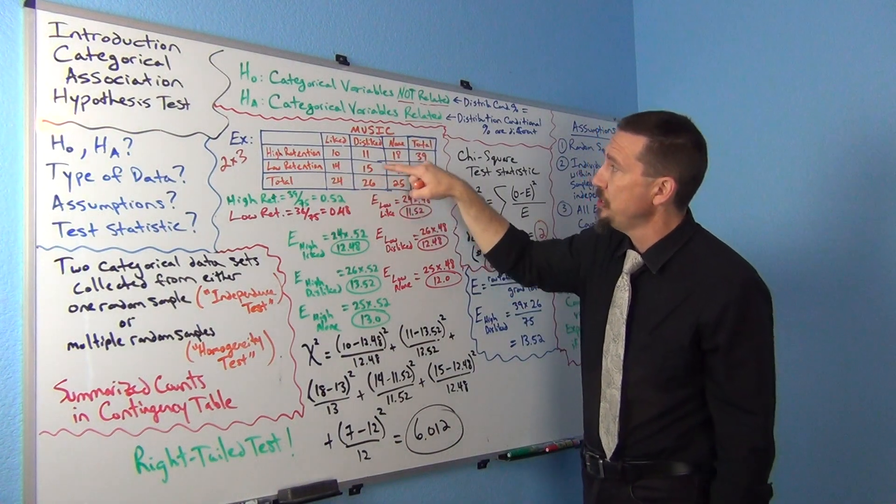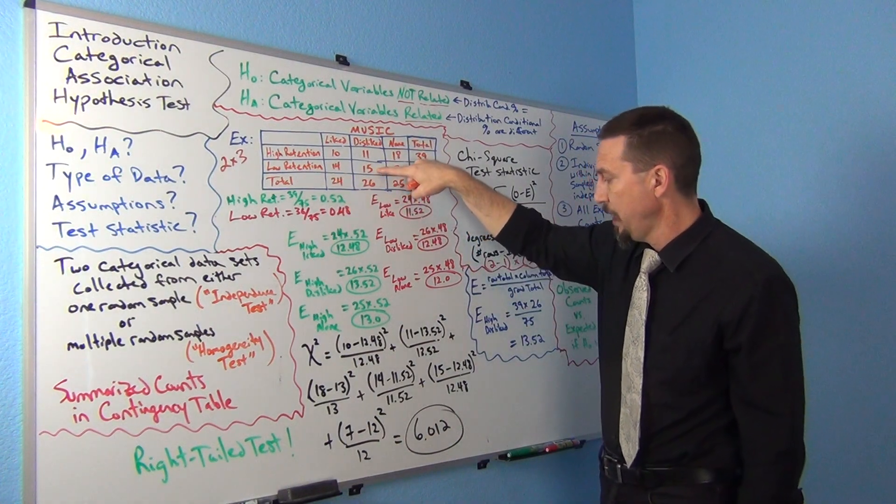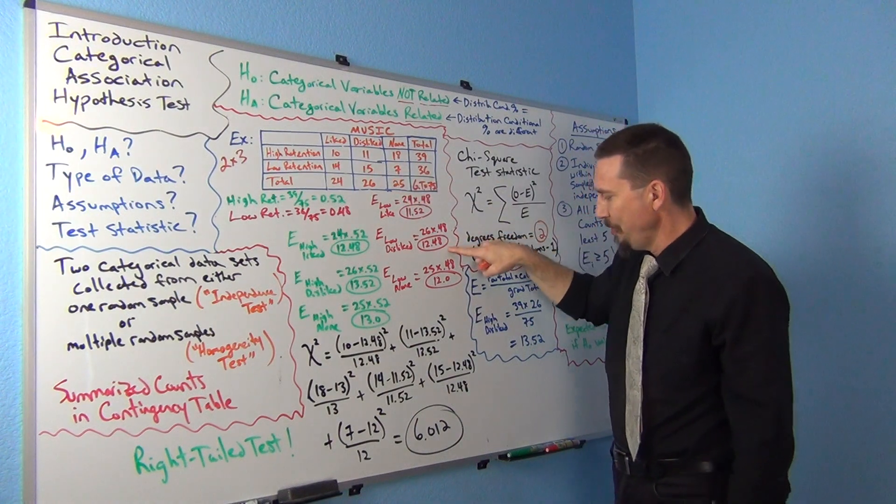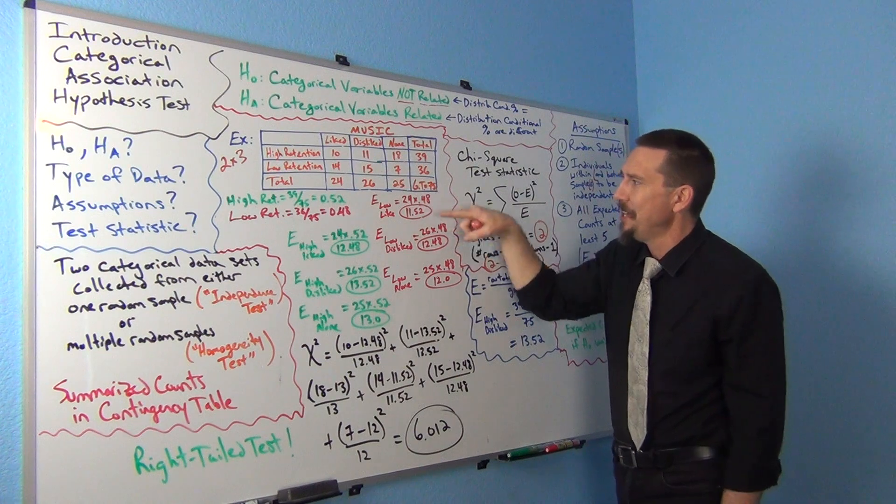Disliked music, low retention, that's 15, my observed count. Again, disliked low was 12.48, my expected count. You got to make sure you match them up.